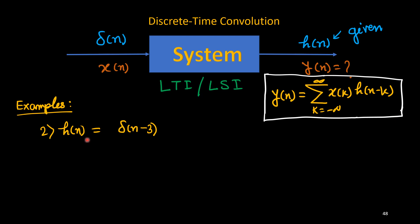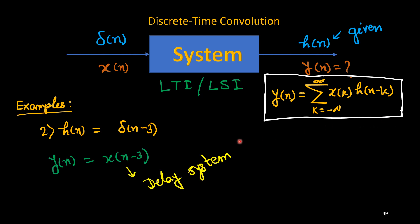Next, if h(n) = δ(n−3): applying δ(n) gives output δ(n−3), which is a delayed output. Therefore if we apply x(n), the output should be x(n−3). This is a delay system — the output is delayed by three samples.